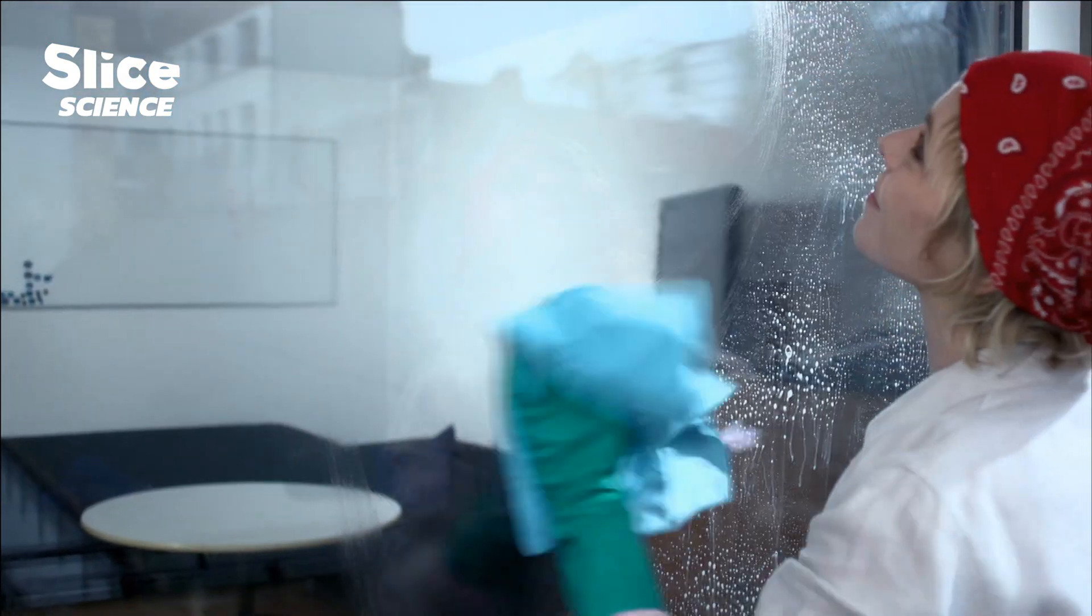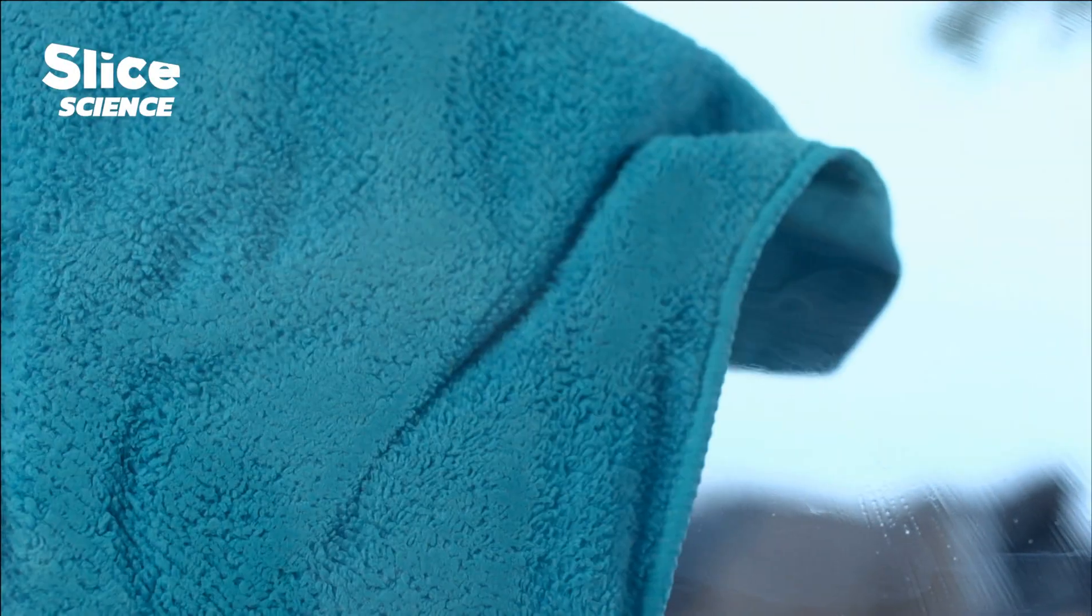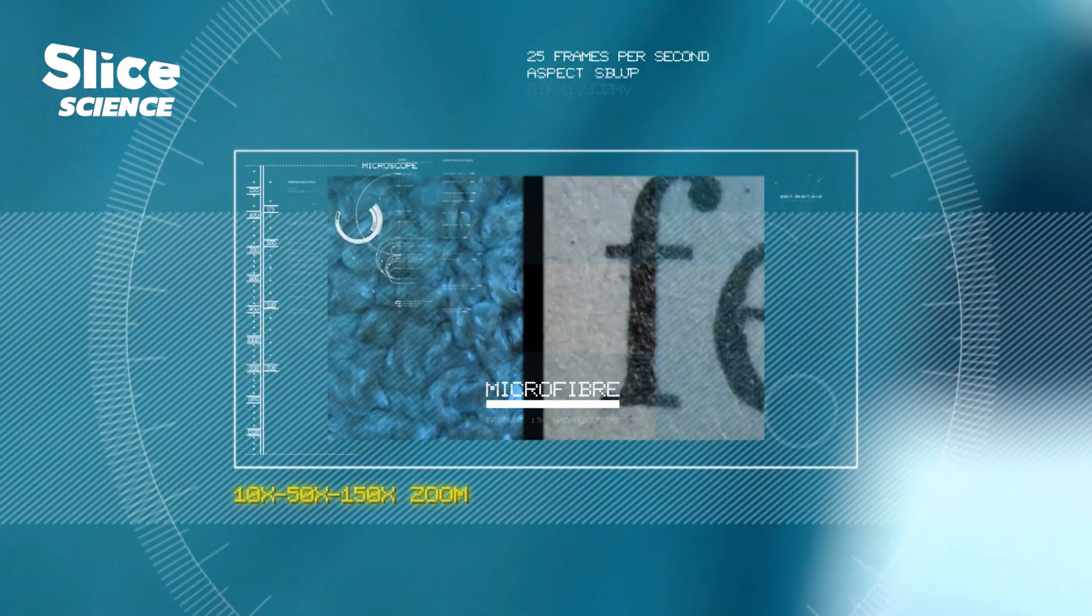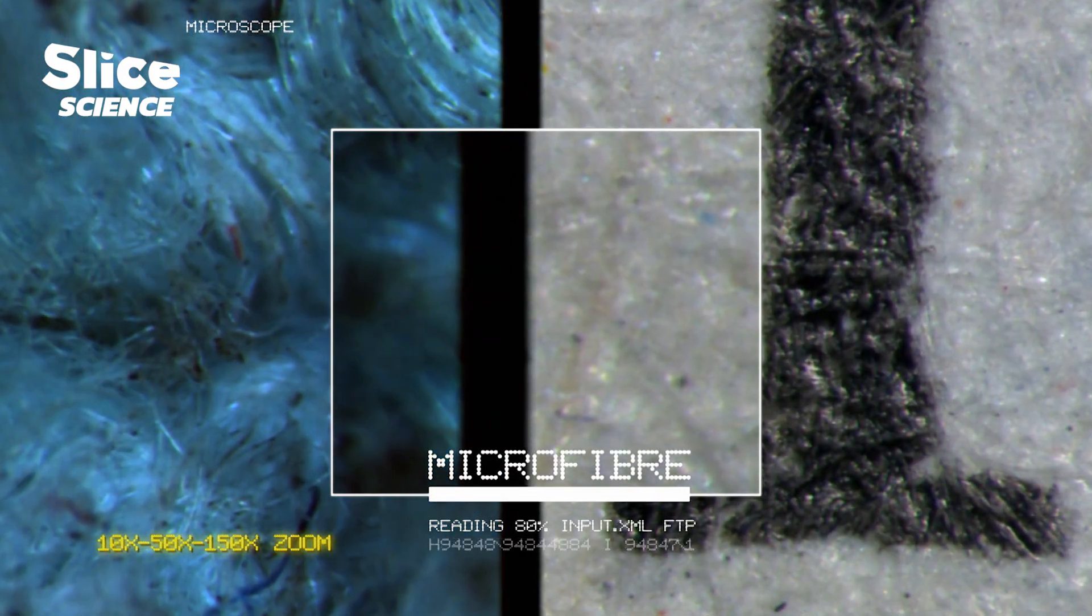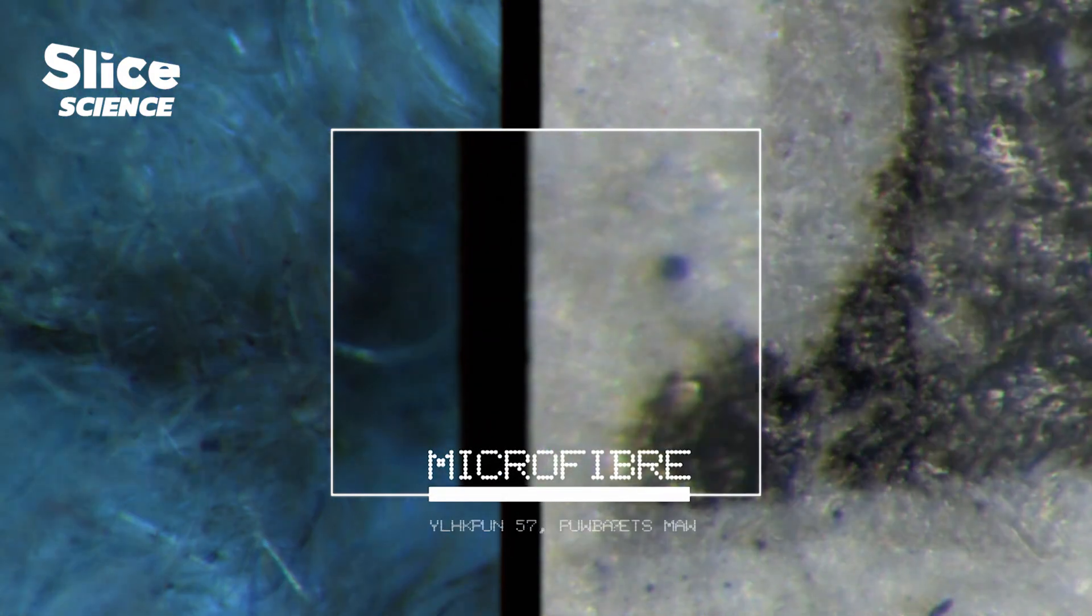Magnifying the process a hundred and fifty times, we can see how a microfiber cloth does a much better job than the paper cellulose ever could. Its many tiny fibers are shown on the left and can absorb a lot more water.